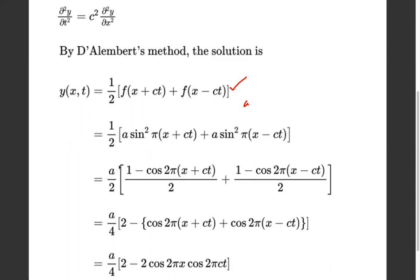Taking a as a common factor, y(x, t) = (a/2)·[sin²(π(x + ct)) + sin²(π(x - ct))]. Now using the identity sin²θ = (1 - cos 2θ)/2, we substitute for both terms: a·sin²(π(x + ct)) = [1 - cos(2π(x + ct))]/2, and similarly for the minus term.